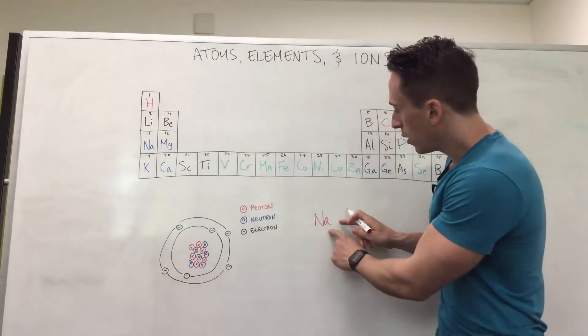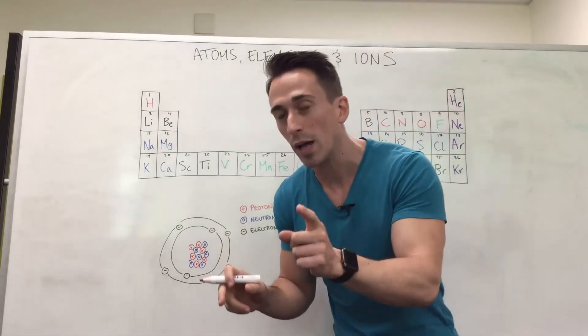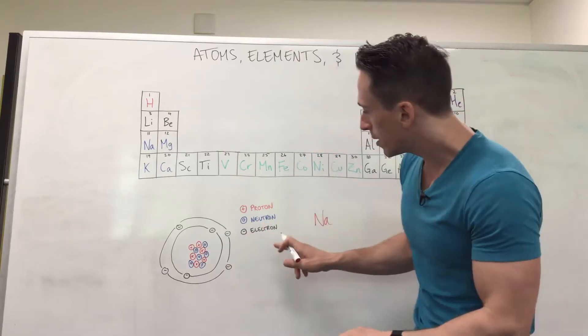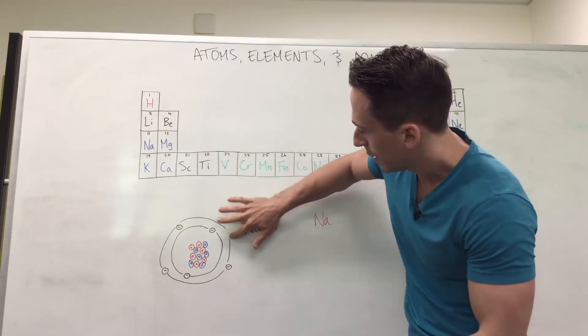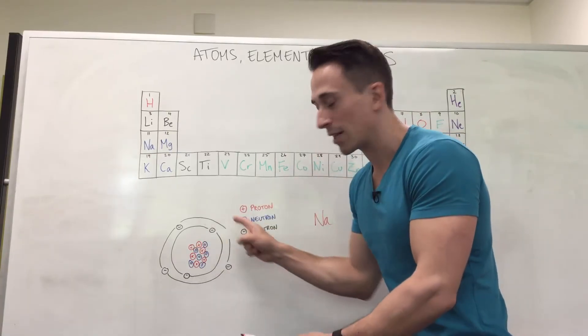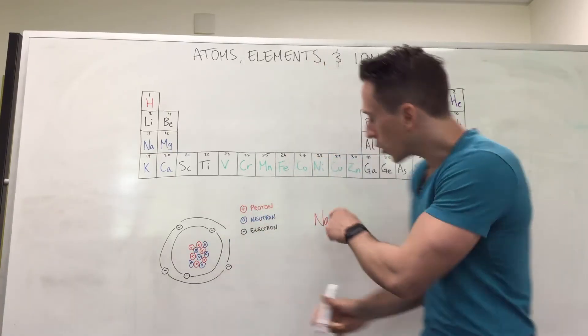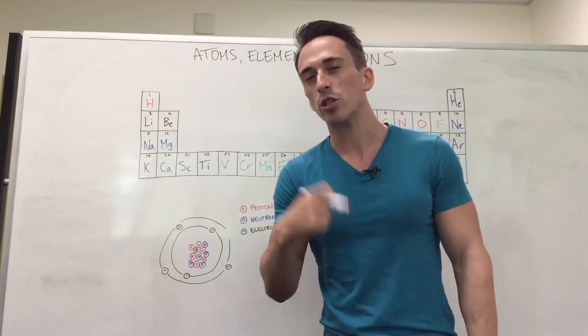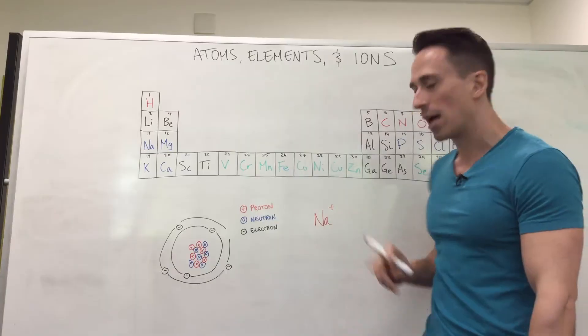So if sodium, which has 11 electrons, loses one, it's going to be closer to being like neon. But if it loses a single electron, that means it's no longer neutral. There's more protons than electrons by one, which means sodium has an overall positive charge. So this is why sodium becomes Na plus in the body.